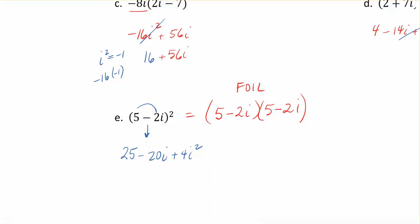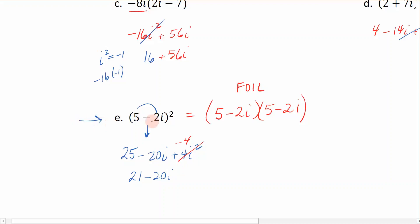We know i squared equals negative 1, so positive 4 i squared becomes negative 4. So we have 25 minus 4, which is 21, minus 20i. The shortcut is: square the first, double the product, square the last. Using this special product form, we quickly arrive at 21 minus 20i. Once you're done watching the video, I'd like you to work through this example by hand using FOIL, just like we did in example D, and make sure you get the exact same answer — I guarantee you that you will.